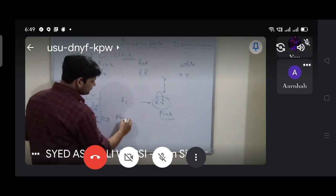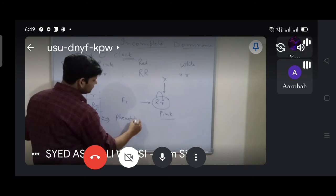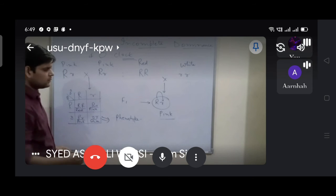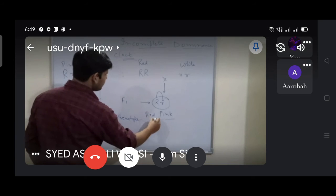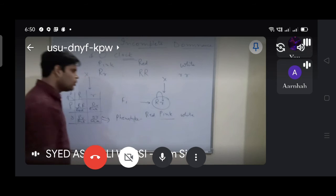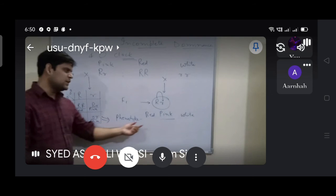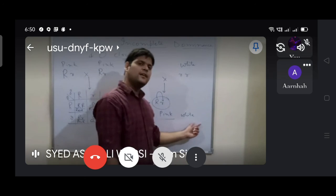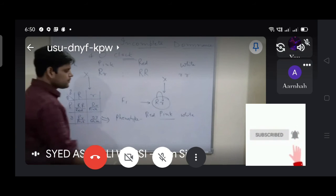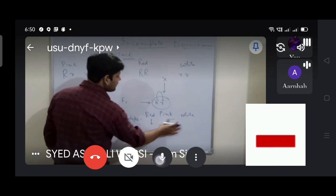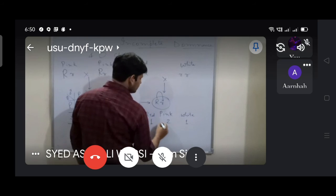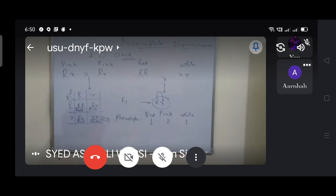If this is the ratio, the phenotype ratio is what is it? 1 is to 2 is to 1. No, 1 is to 2 is to 1. Phenotype 3 is to 1? Do you have three types of phenotype? One is two one. One, two, one.